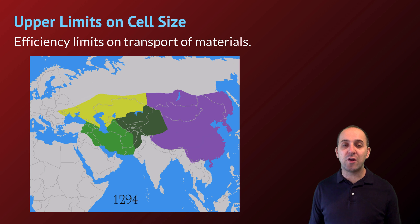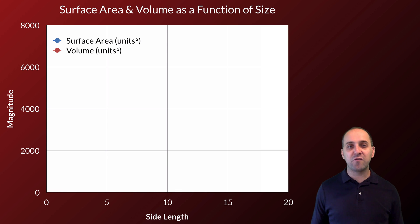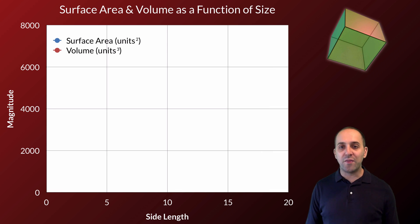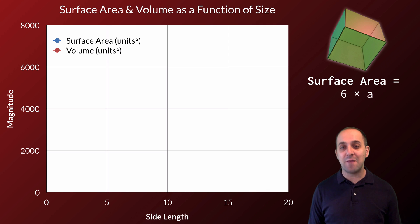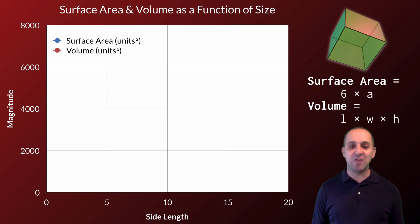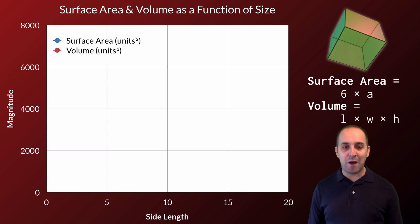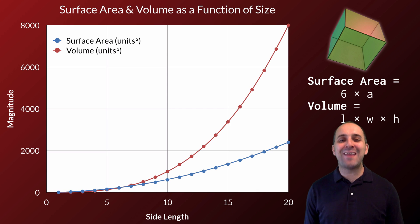Even though it's not a cellular example, it's a great illustration of a larger phenomenon — that as things get bigger, they frequently get inefficient. We can model this mathematically by looking at what happens to a three-dimensional object's surface area and volume as a function of its size. For this illustration, I'm going to go with a cube. The surface area of a cube is calculated by finding the area of any one side and multiplying by six, while the volume is the side length cubed. Notice that the volume is increasing at an exponentially faster rate than the surface area is.